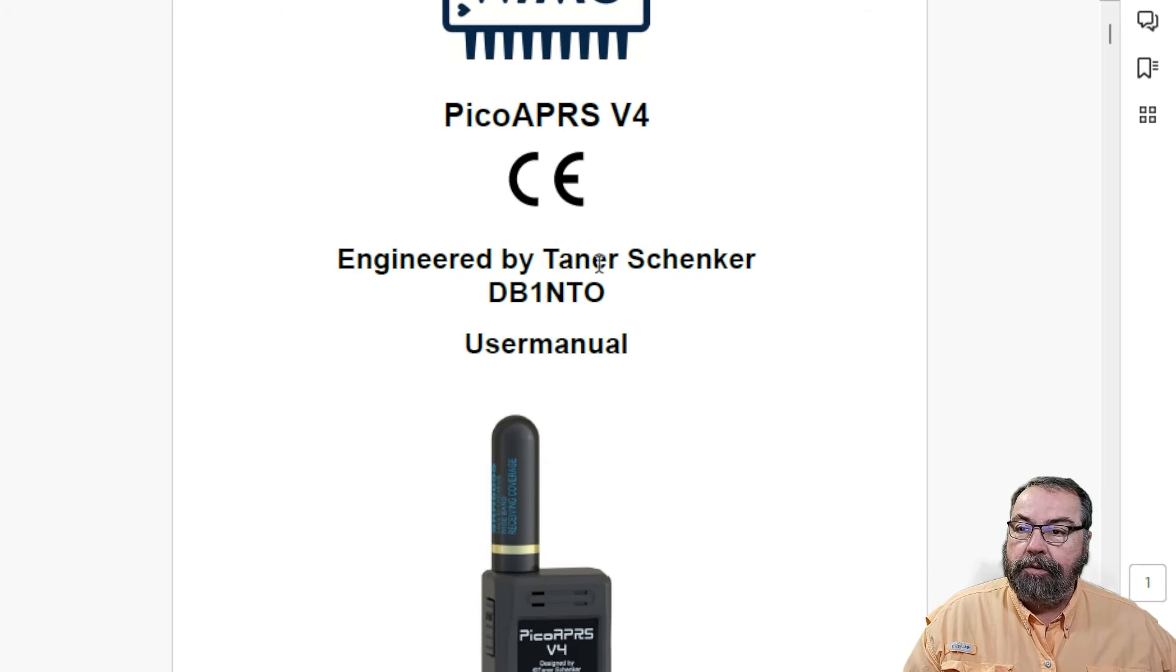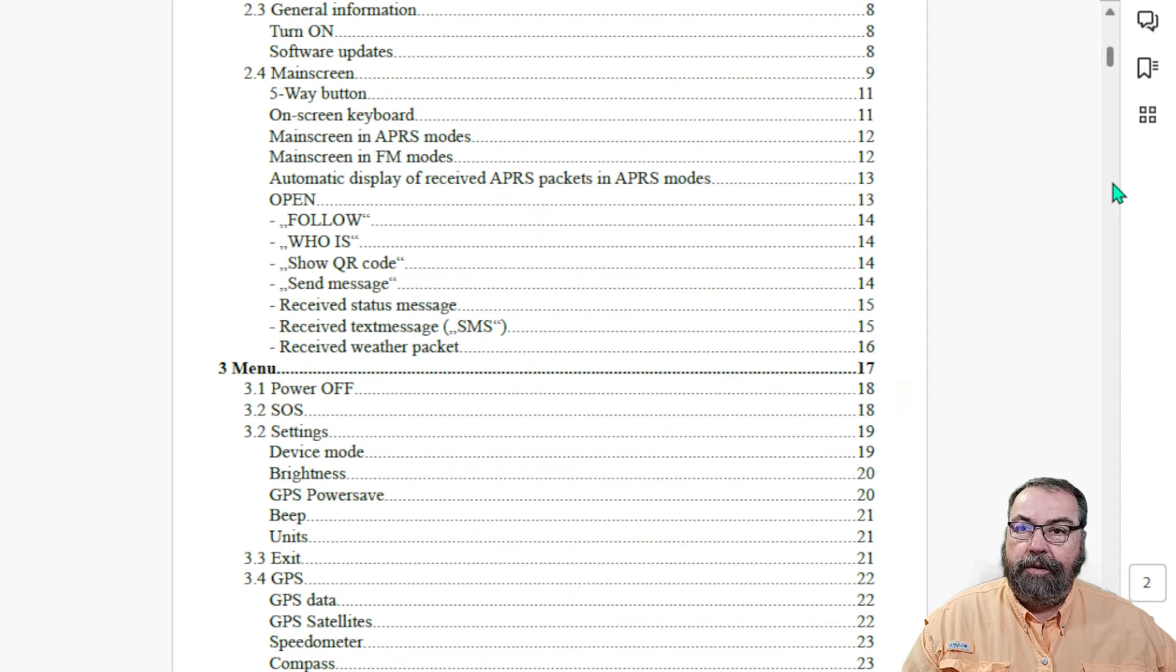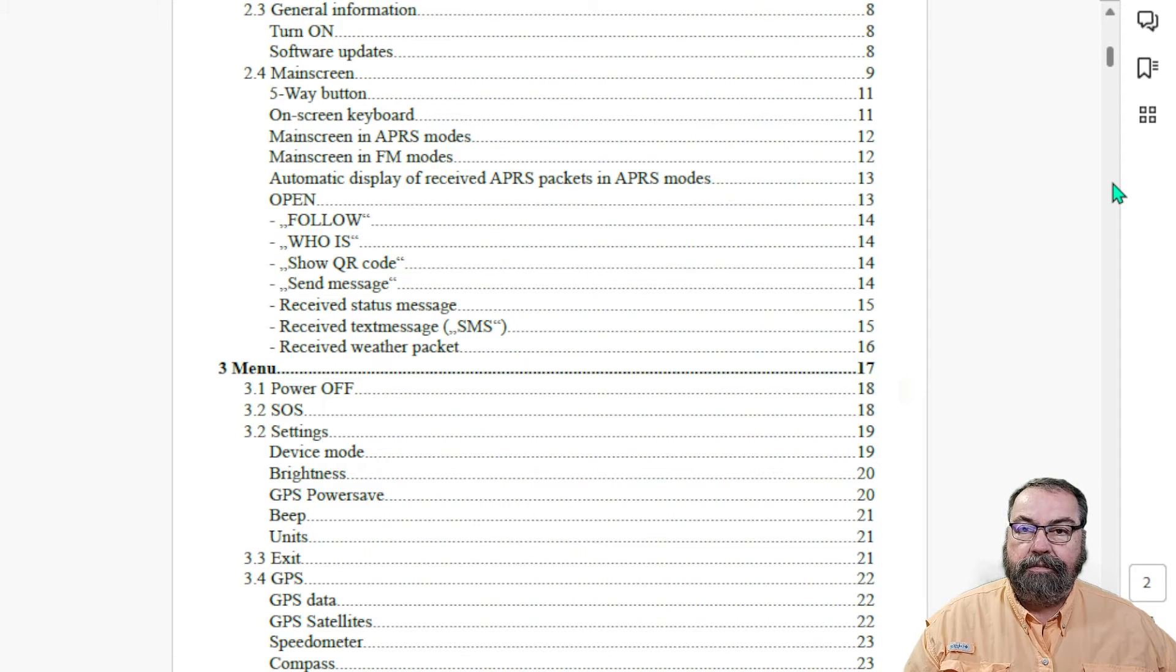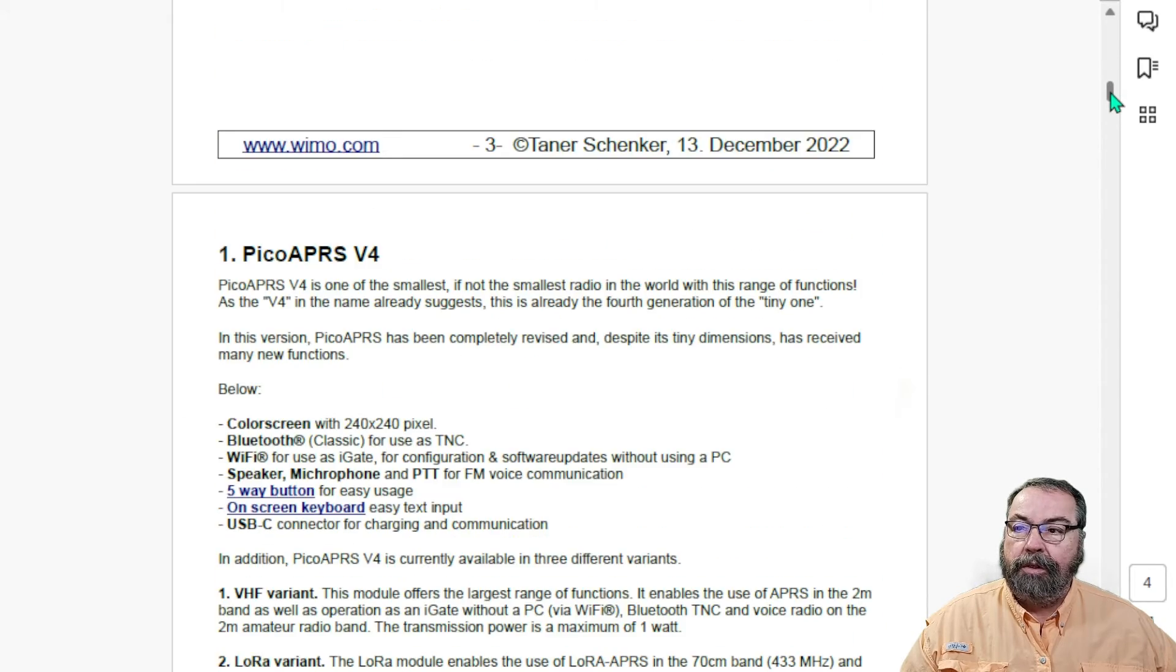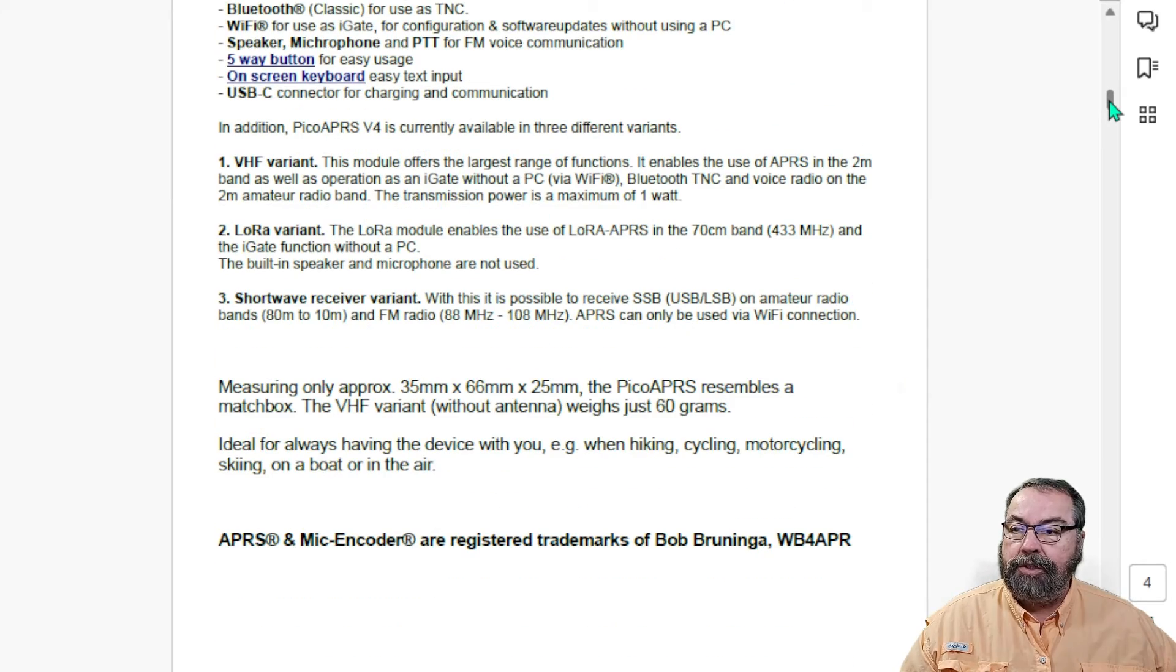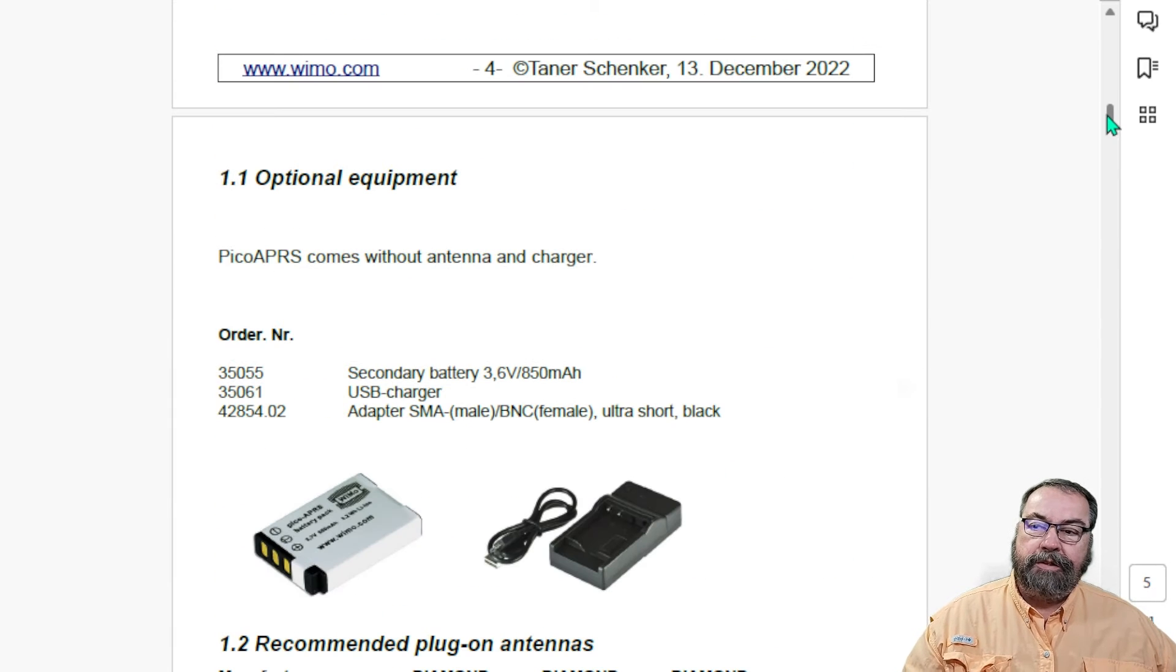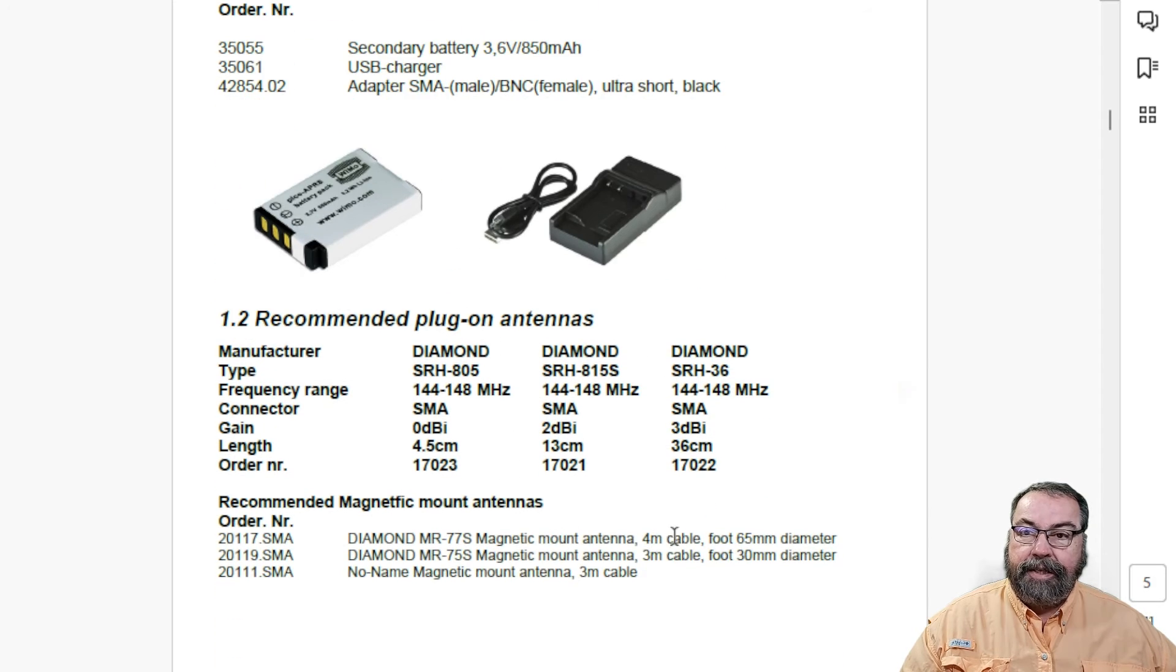Here's a quick view of the user manual. We're not going to go through all of this. The documentation on this device is outstanding. It's a very well-written manual that clearly explains how all the different modes work and the settings you need to change or whatever. I mentioned that this does not come with an external battery charger, but you can order that as well as a secondary battery. It does come with the battery built in and a small USB-C cable for charging. You can charge this from a PC or from a power bank, which is what I've been running it on today for this video. And then here's some recommended antennas they give you in there for that.